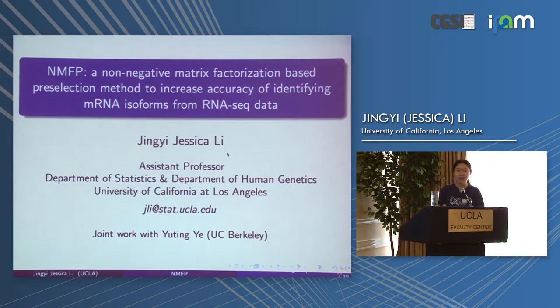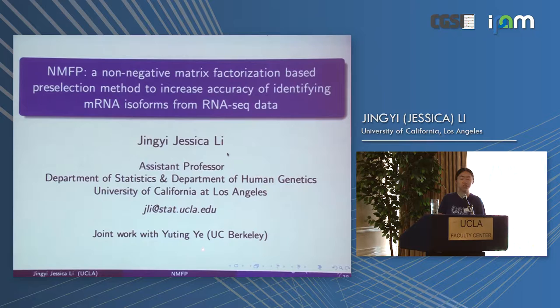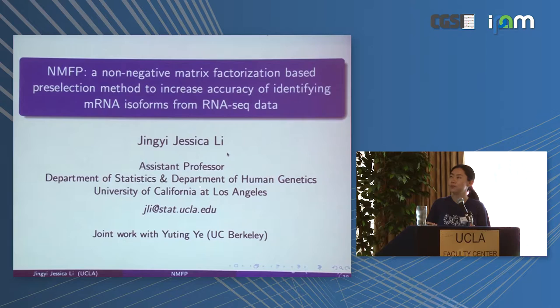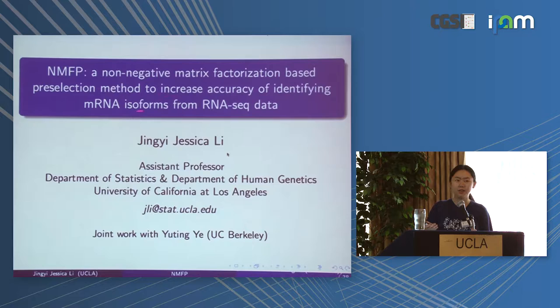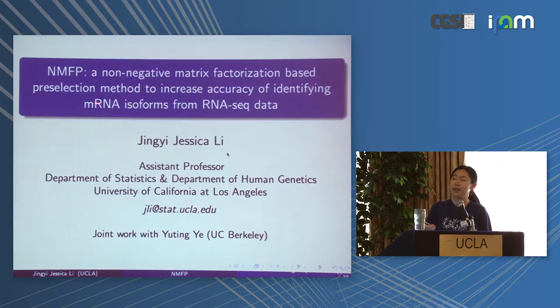Thank you for staying for my talk. This is joint work with a previous undergraduate student who visited the summer meeting and is currently attending a PhD program at UC Berkeley. In this talk I want to discuss our recent work applying a technique commonly used in artificial intelligence, machine learning, and genomics — non-negative matrix factorization — to do pre-selection on possible mRNA isoform candidates.